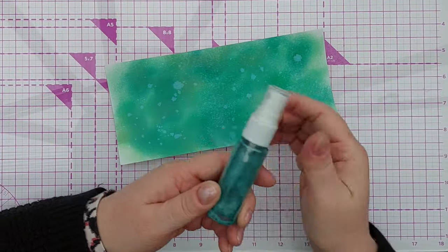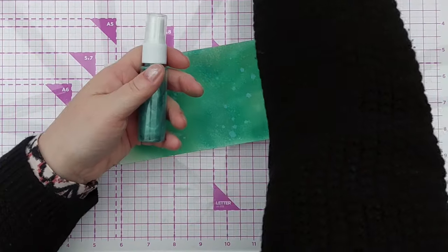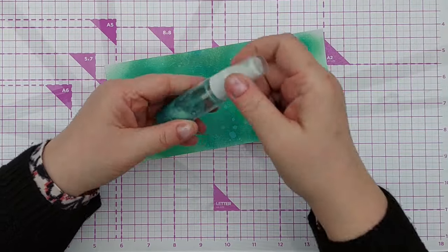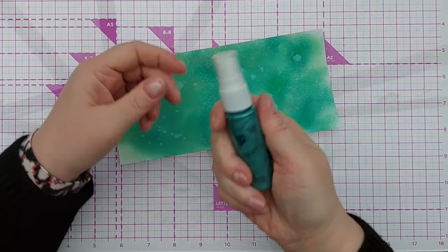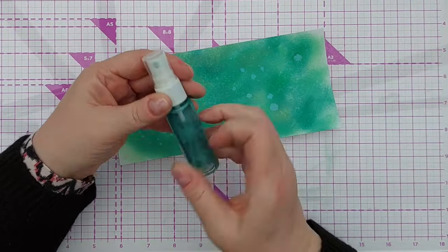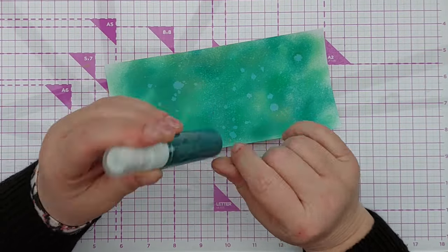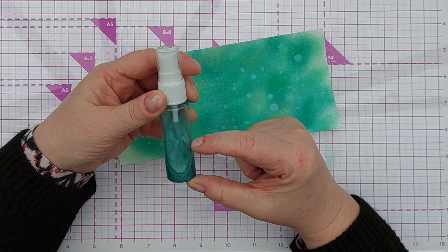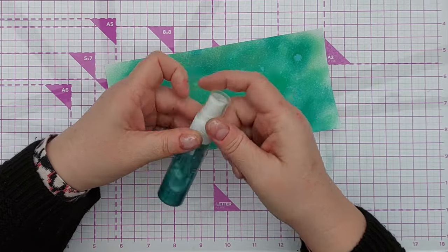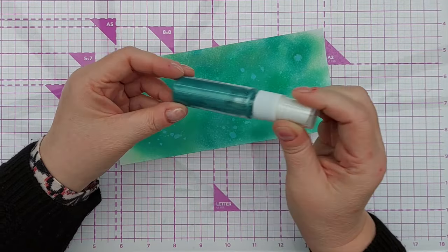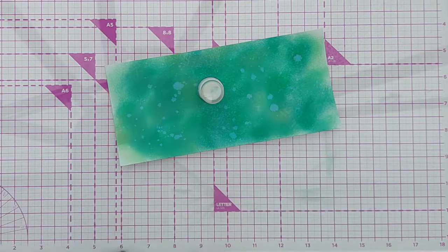Now I'm going to spritz this with some green shimmer spray. I've made this myself. I took a little travel water spritzer, put some water in it, about a third of the way up, and then added a couple of spatulas worth of luscious pigment powder.